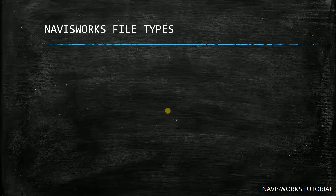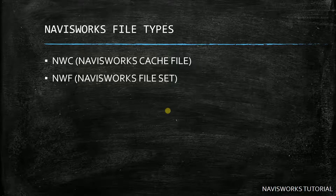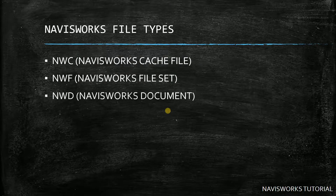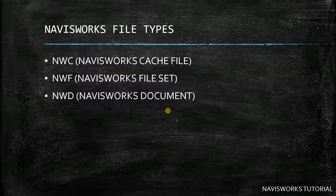Although Navisworks can open multiple types of files, it has three main file types: NWC, which is the cache file; NWF, the Navisworks File Set; and NWD, which is the Navisworks Document — the native file of Navisworks.